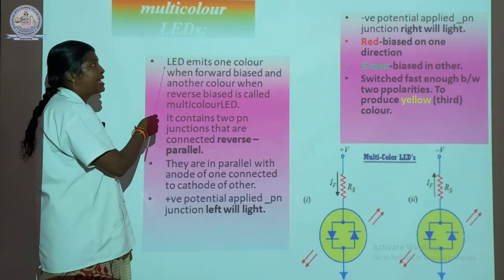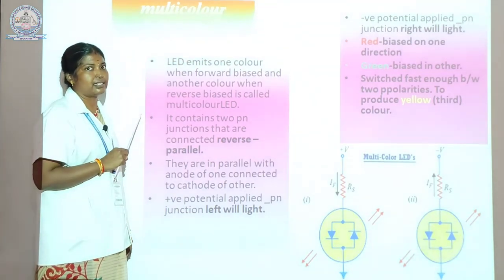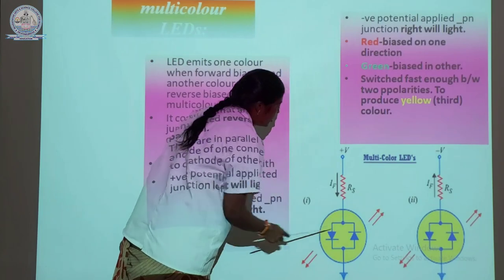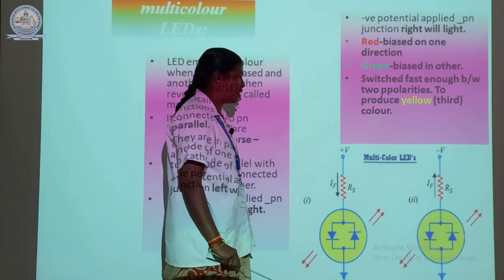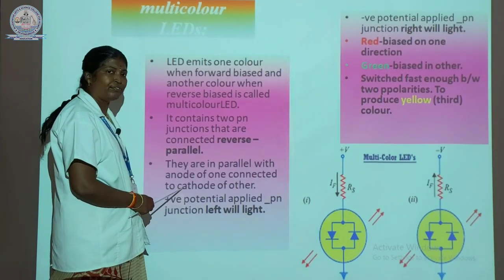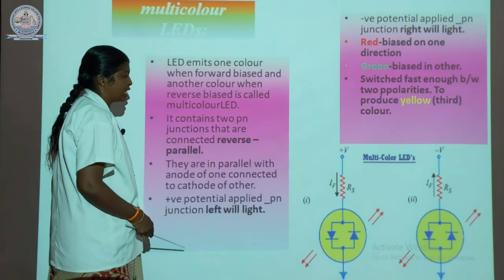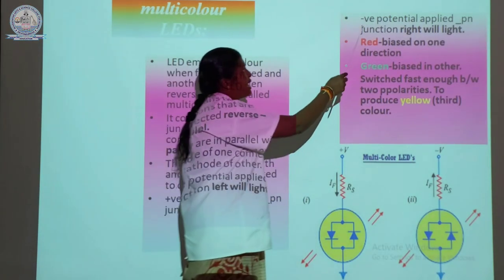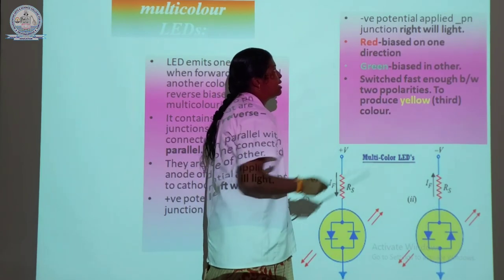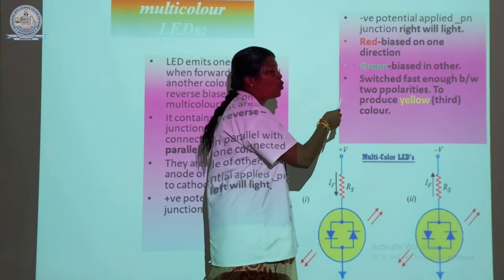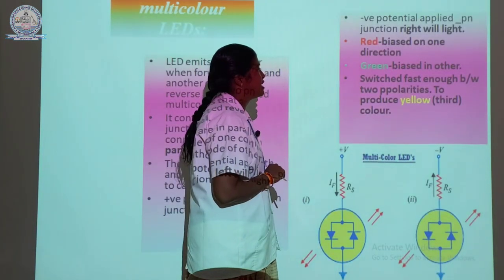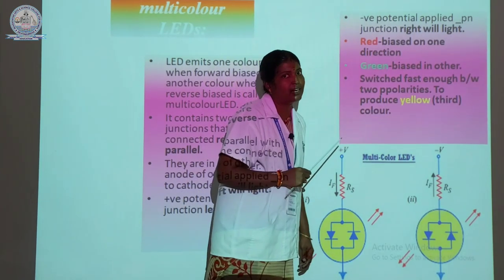Next, we discuss multicolor LEDs. An LED emits one color when forward biased and another color when reverse biased — this is called a multicolor LED. It contains two PN junctions connected in reverse parallel manner, with the anode of one connected to the cathode of the other. When positive potential is applied to one PN junction, it emits light on the left side; when negative potential is applied, it emits light on the right side. Red color light corresponds to bias in one direction, green to the other direction. Switching fast enough between the two polarities produces yellow — a third color.